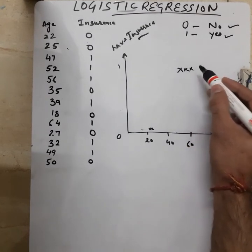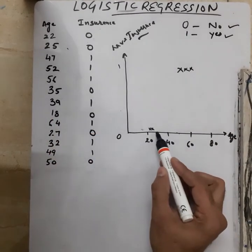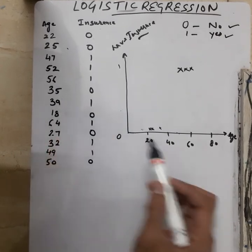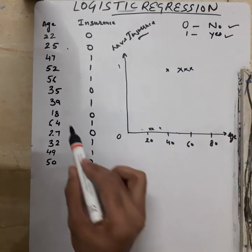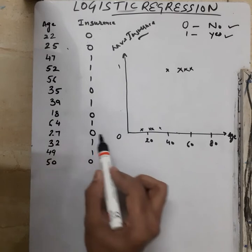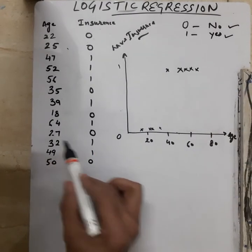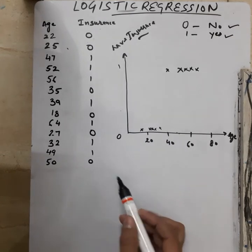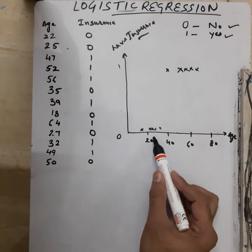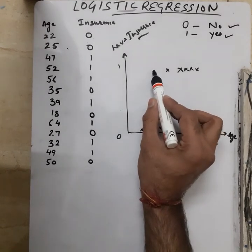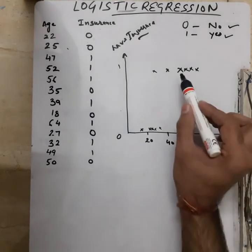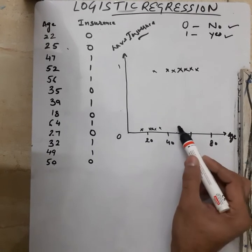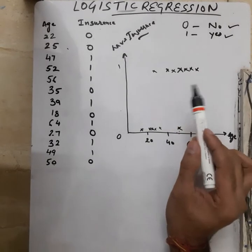Similarly for ages 52 and 56. For age 35 we do not have insurance, so 35 is plotted at zero. For age 39 we have insurance. For age 18 we do not have insurance. For age 64 we have insurance. For age 27 we do not have insurance. For age 32 we have insurance. For age 49 we have insurance, and for age 50 we do not have insurance.